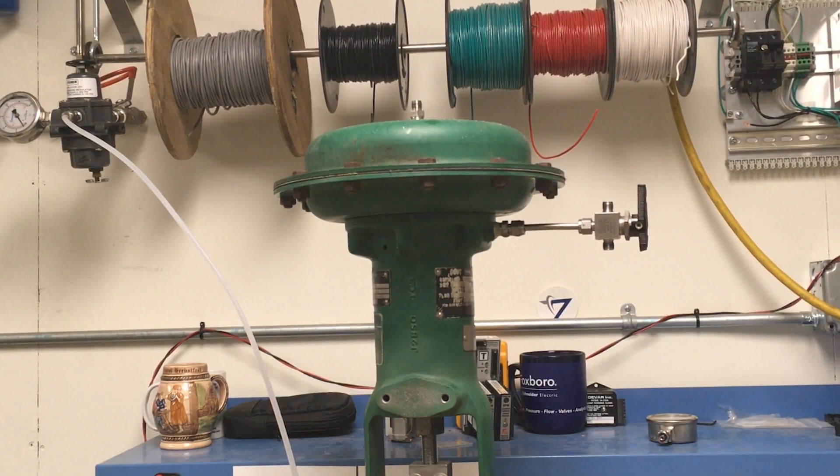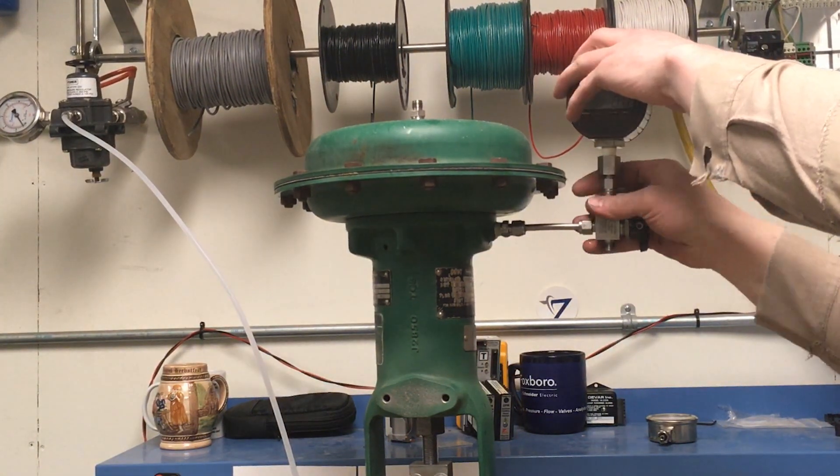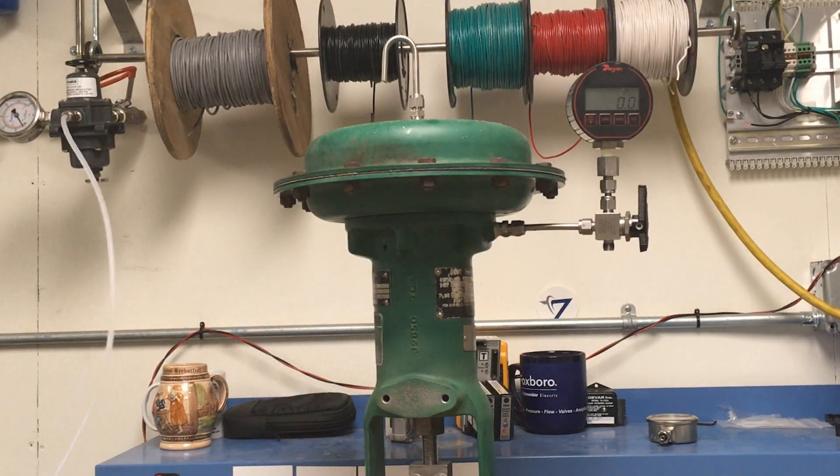To begin with, you will need to connect a three-way valve to the normal supply port of the actuator. We will be connecting a pressure gauge to one side of the valve and the pressure supply to the other side.